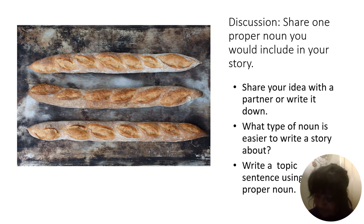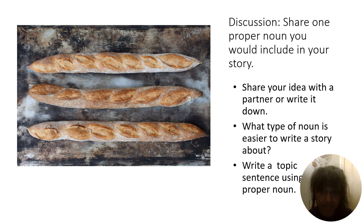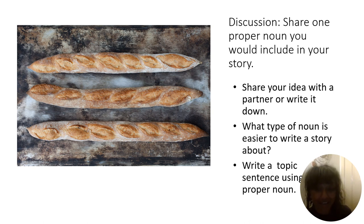Now let's put all this information into action — you can do it as partner work or as a writing activity. The discussion could be: share one proper noun you would include in a story. Share an idea with your partner or write it down. Think about this: what type of noun is easier to write a story about? And then finally, write a topic sentence using your proper noun. Thanks so much for stopping by — remember to like, share, and subscribe if you'd like to hear all things ELA and third grade.